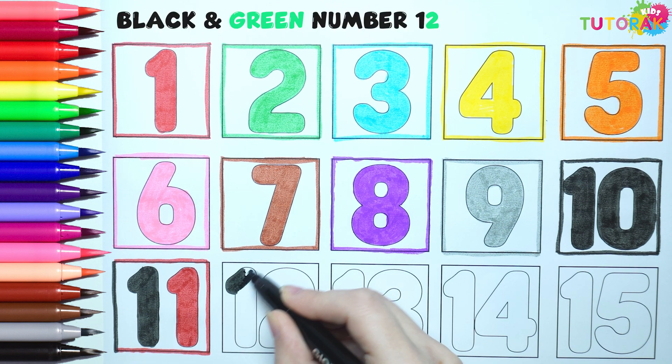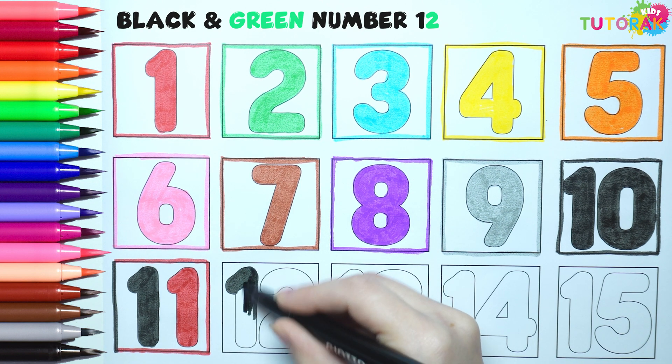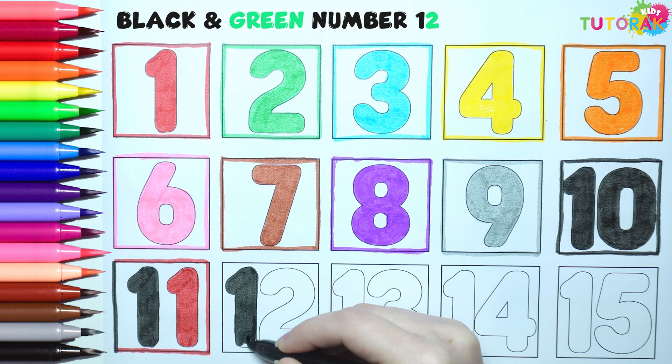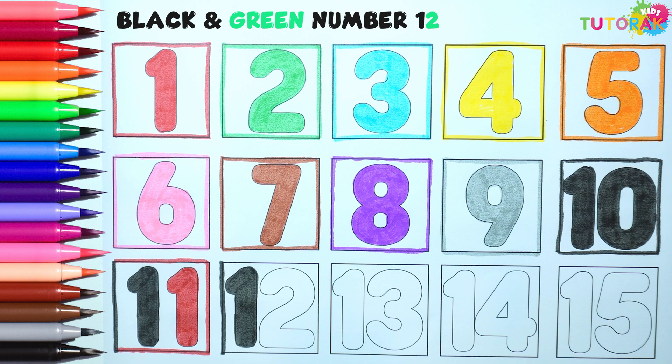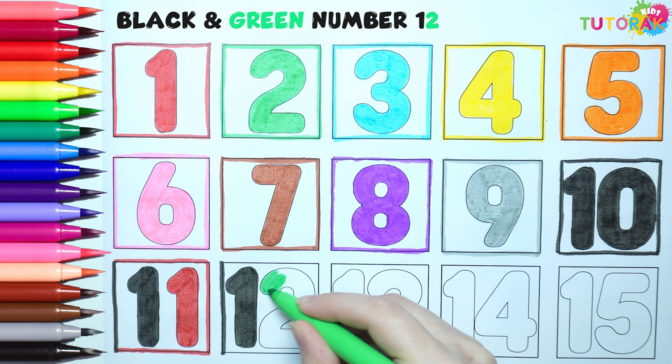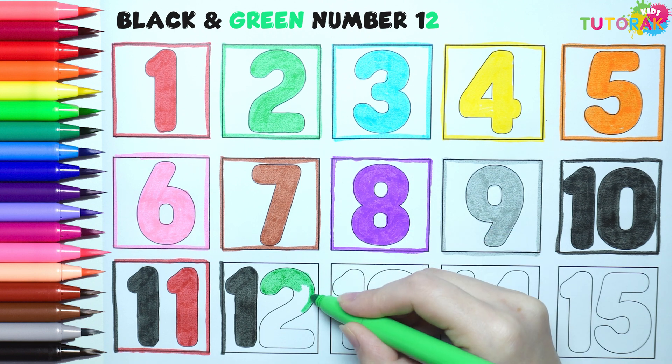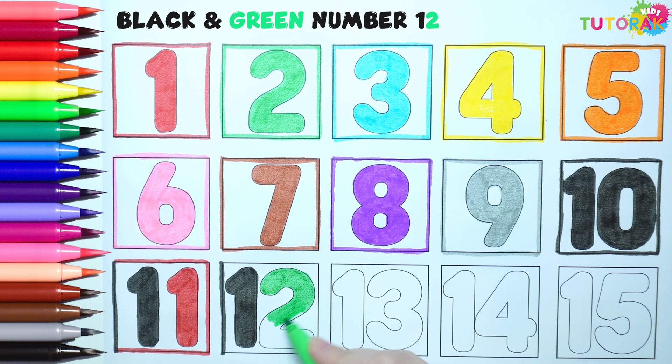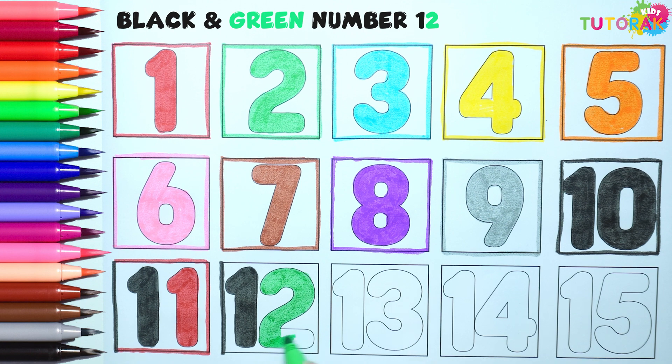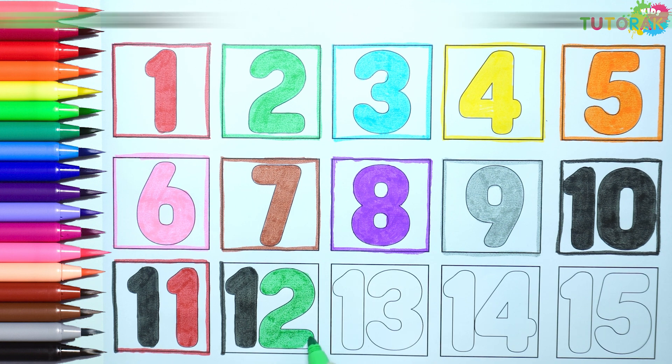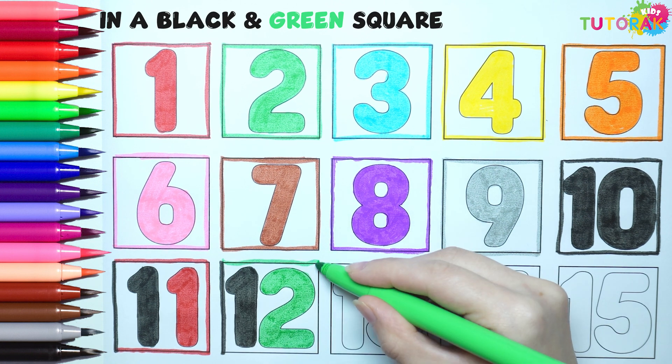Let's do the same with the other numbers. 10 plus 2 make 12. We have black and green 12 in a black and green square.